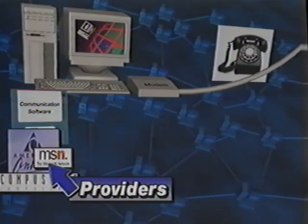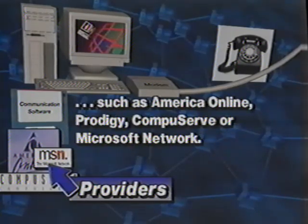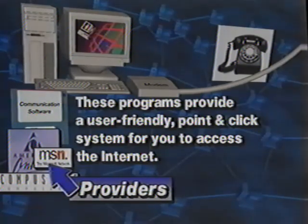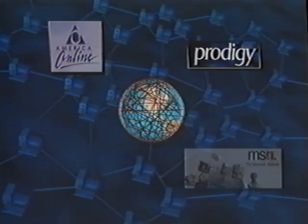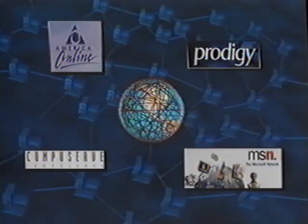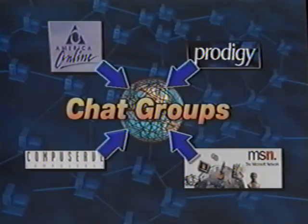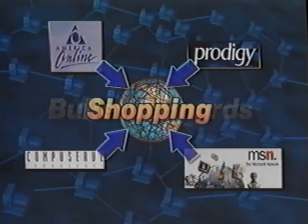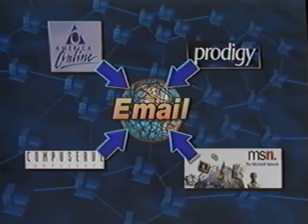There are several ways to access the internet, and the easiest is to use one of the most popular providers such as AOL, Prodigy, CompuServe, or Microsoft Network. These programs are geared to provide very user-friendly point-and-click systems for you to access the internet as well as many other areas of interest. Each of these providers has their own format which includes many services and activities as well as access to the internet. Later in this lesson, I will show you information as to cost and the various services of these providers plus their phone numbers so you can decide which is best for you.